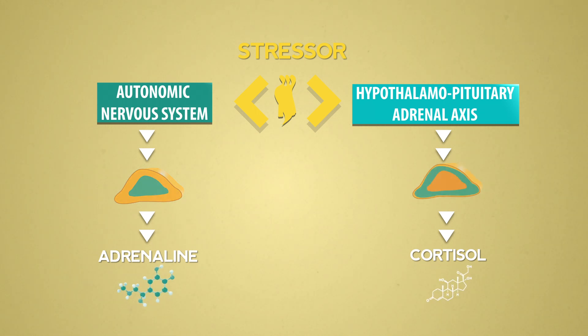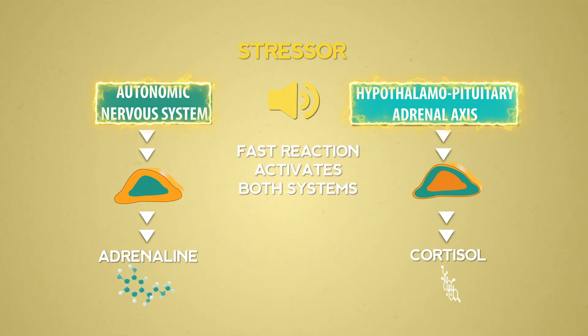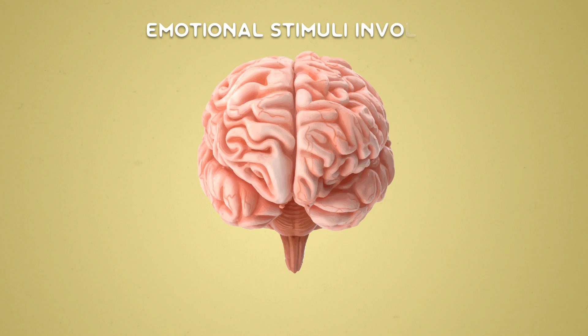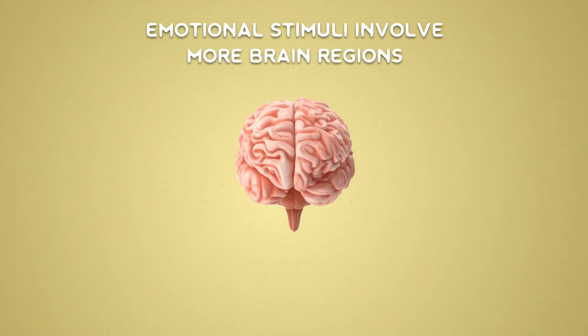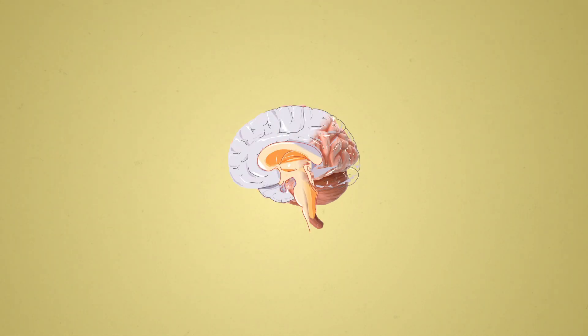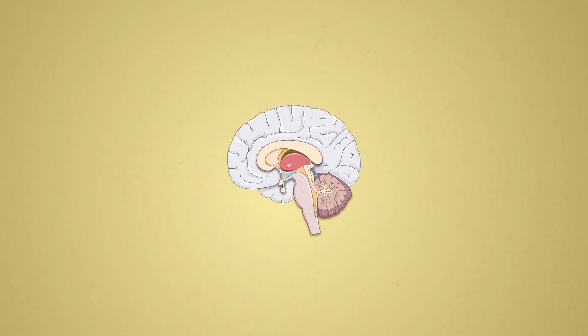Sudden noise, for example, do not require high computational processing and activate the systems very quickly. On the opposite, stressors such as emotional stimuli require thorough processing by the brain. In this case, the information sent by our senses is relayed through several brain regions.